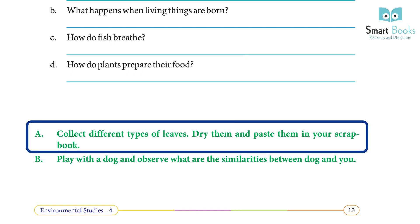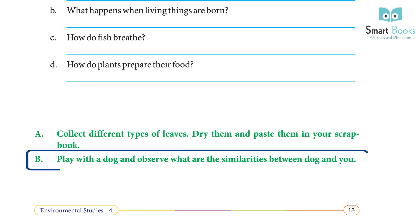Activities: A — Collect different types of leaves, dry them, and paste them in your scrapbook. B — Play with a dog and observe what similarities exist between the dog and you.